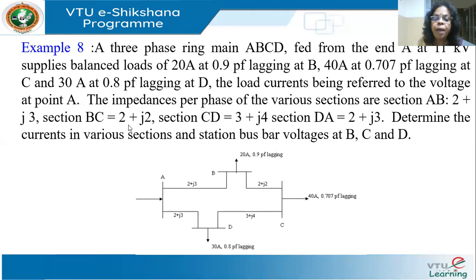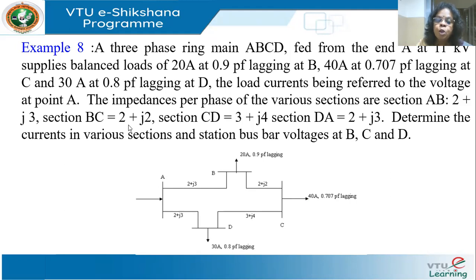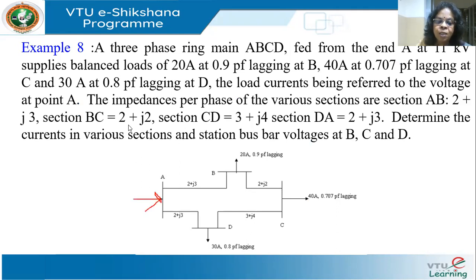Now let's consider a ring main problem. We have done a number of problems on radial distributors. Now we'll take a ring main distributor. I have a three-phase ring main A, B, C, D. A ring main starts at one end and goes in a loop and comes back. It is fed from end A at 11 kV — the arrow is into the network, so that means it is feeding. This is the source.